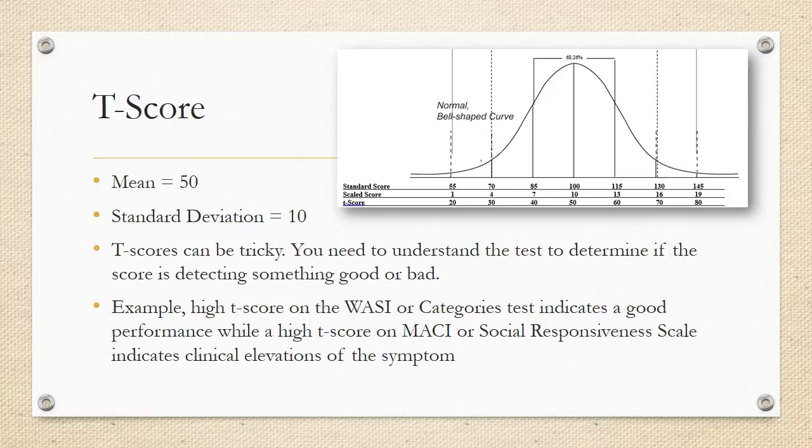A t-score is a score again on the bell curve, but this time we have a mean of 50 and a standard deviation of 10. Now t-scores can be tricky. You need to understand the test to determine if the score is detecting something good or bad. For example, a high t-score on the WASI or say the categories test indicates a good performance, while a high t-score on say the MACI or the social responsiveness scale indicates clinical elevations of the symptom that's being tested.